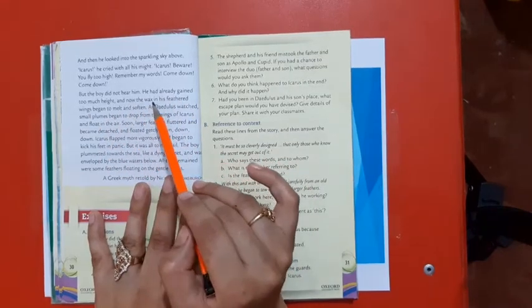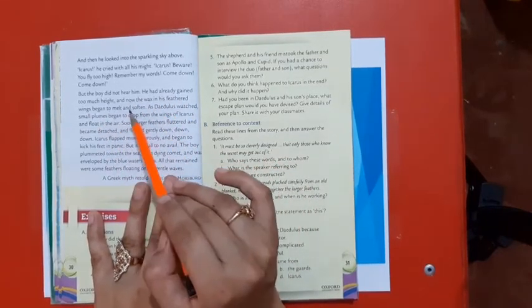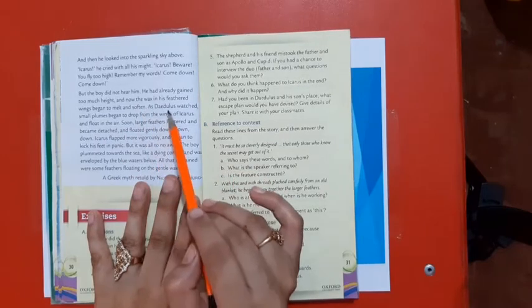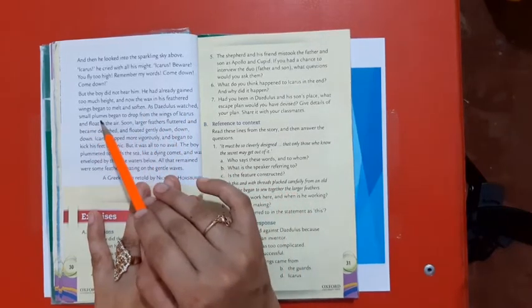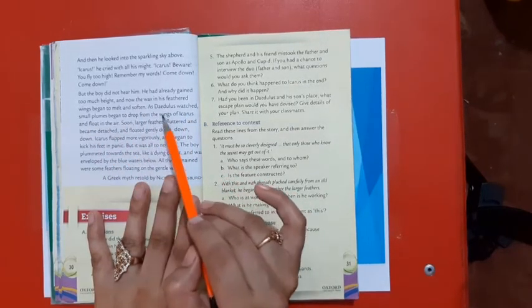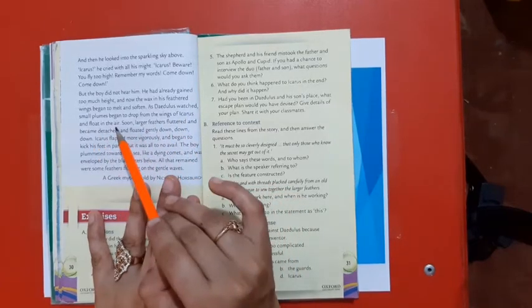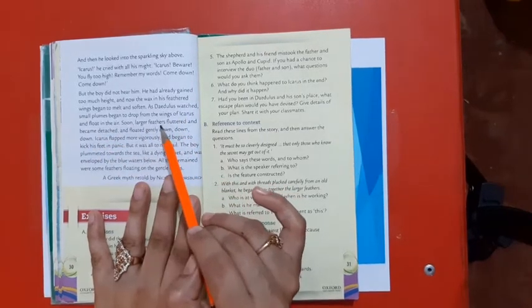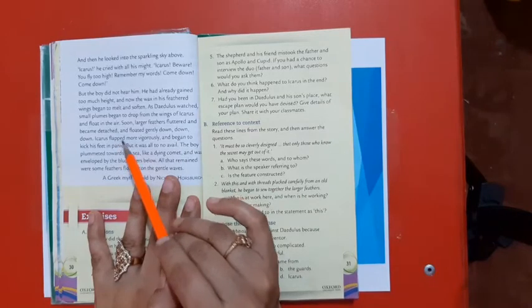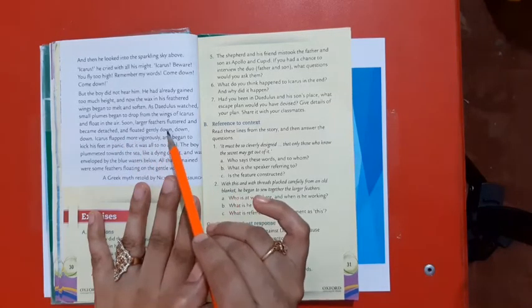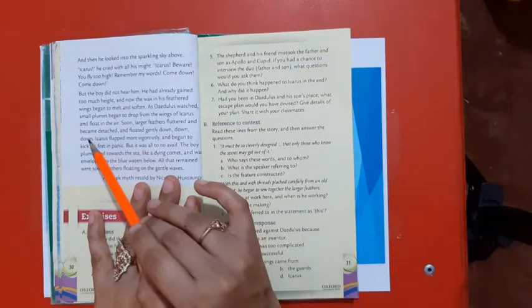And now the wax in his feathered wings began to melt and soften. As Daedalus watched, small plumes began to drop from the wings of Icarus and float in the air. Soon larger feathers fluttered and became detached and floated gently down, down, down.